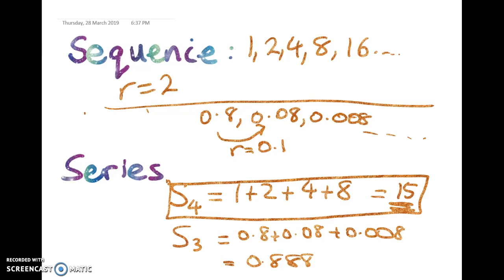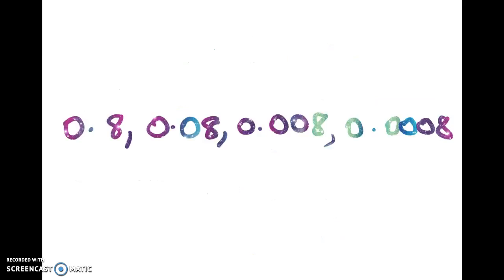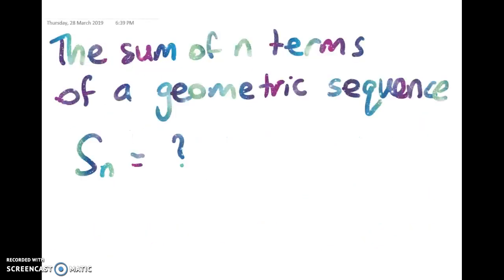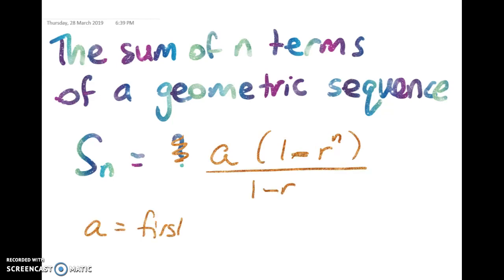So we're going to do a wee proof. It's a really nice little proof. It's not too hard. So this is where we're going to get to. We're going to show that the sum of n terms is equal to a times 1 minus r to the power of n divided by 1 minus r. So a is the first term and r is equal to the common ratio.